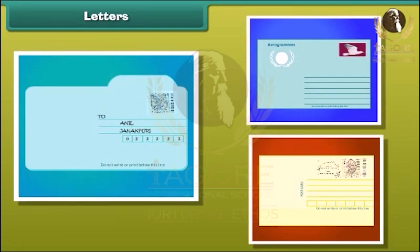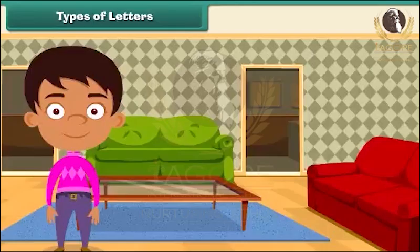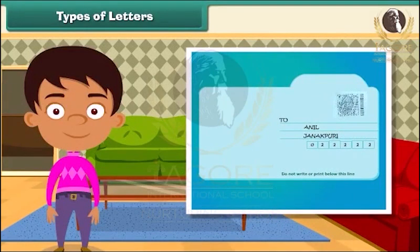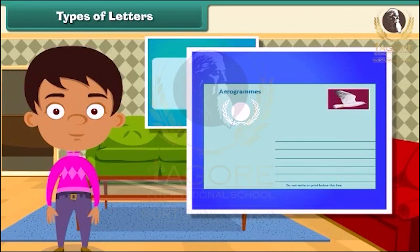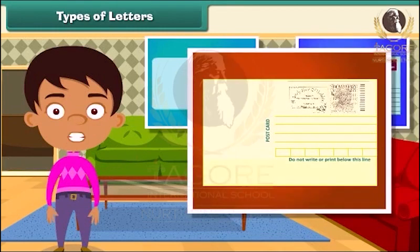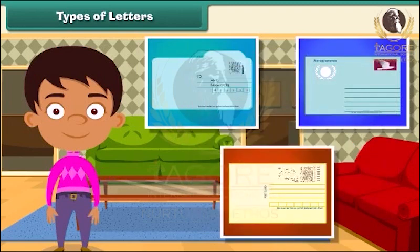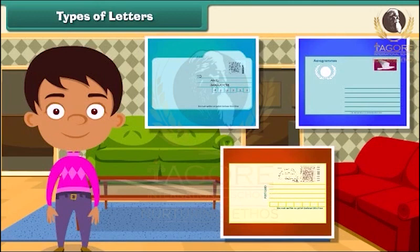Let's know about them in detail. The inland letter is a light blue colored sheet of stamp paper which contains a message and gets folded in a particular way. An aerogram is also a type of inland letter carried by airmail. The other type of letter is known as postcard. A postcard is meant for exchanging information written on a small yellow colored card. And there are some letters that reach us really fast — these are telegrams.